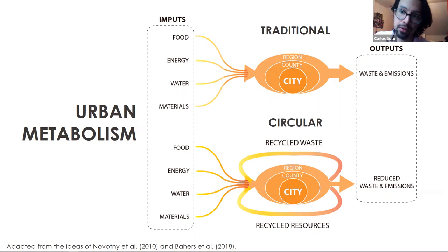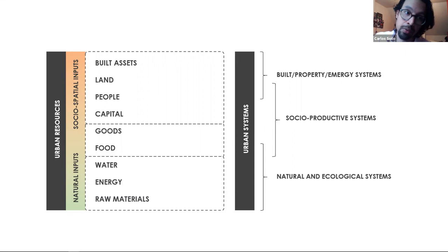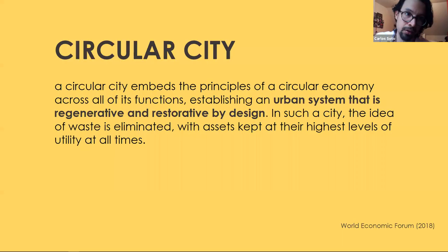When we look at urban resources we have water, energy, and raw materials, but as urban planners and designers we also have social inputs: built assets, land, people, capital, and goods produced by industries and businesses located in our cities. These are parts of different systems: the built and property systems, social productive systems, and the natural and ecological systems. By definition, a circular city is one that embeds these principles, establishing urban systems that are regenerative and restorative by design, where waste is eliminated and assets are kept at their highest utility at all times.